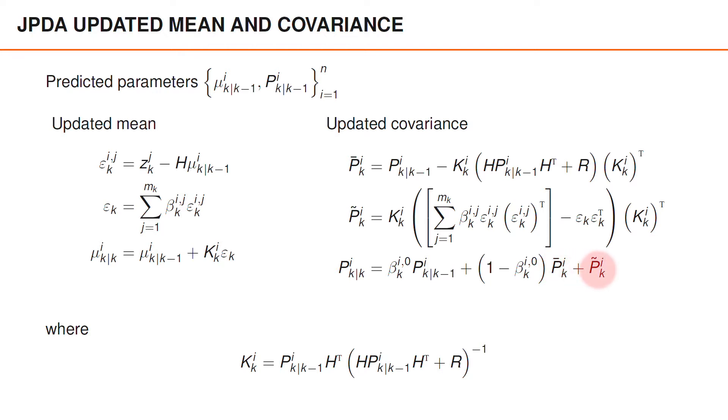And the third part is p tilde. If the gated measurements are quite similar, or close together, their corresponding innovations will also be similar, and their spread will therefore be small, leading to a small p tilde. Similarly, if the gated measurements are different, their innovations will be different, and this will lead to a large spread and a large p tilde.